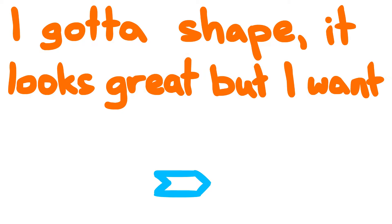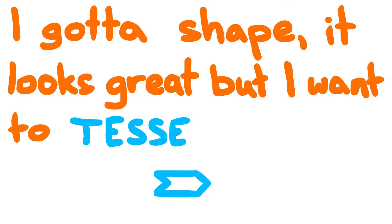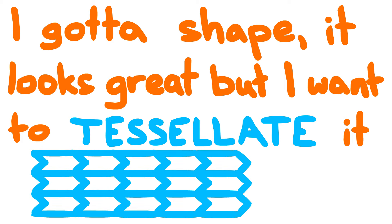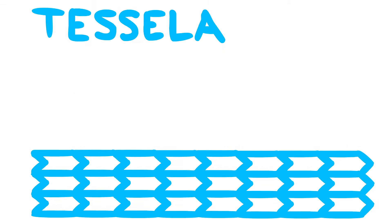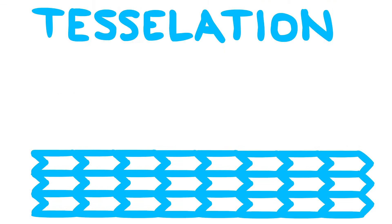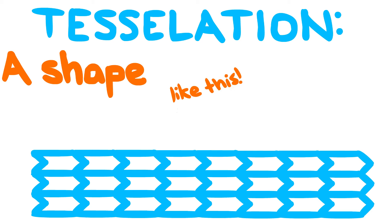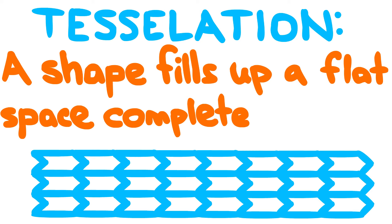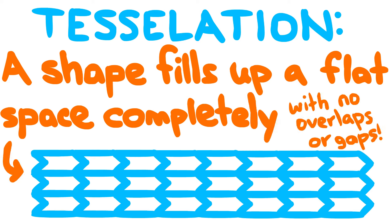I've got a shape, it looks great, but I want to tessellate it. That's where it fills up the flat space with no overlaps or gaps.